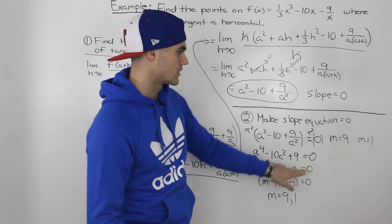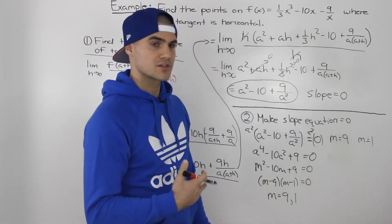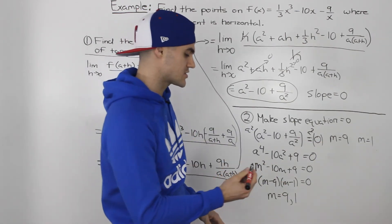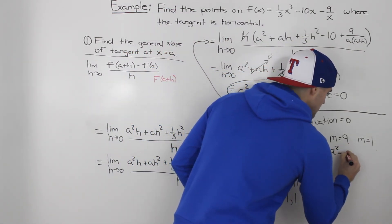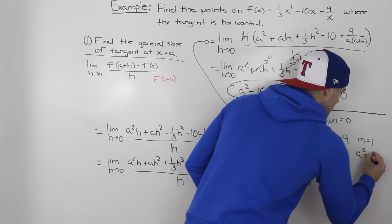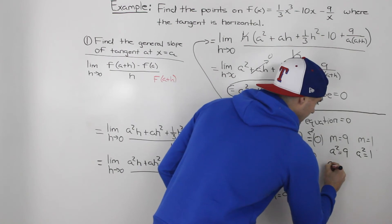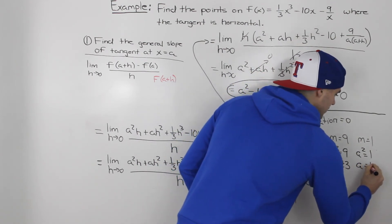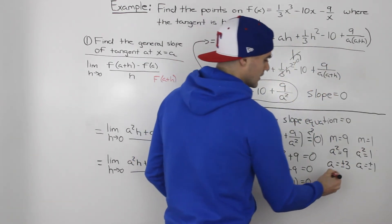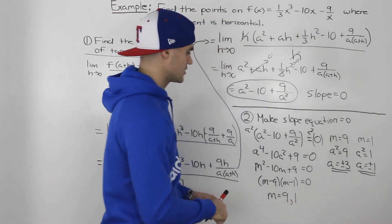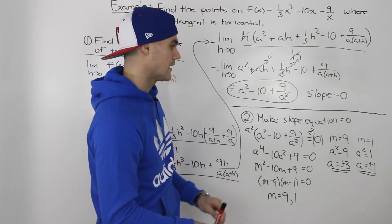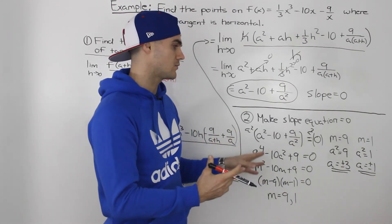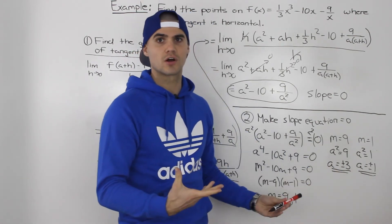However, we're solving for a, not m, so we substitute back. From a² = 9, we get a = ±3; from a² = 1, we get a = ±1. These four solutions are all valid since none of them equal 0, which was our stated restriction.